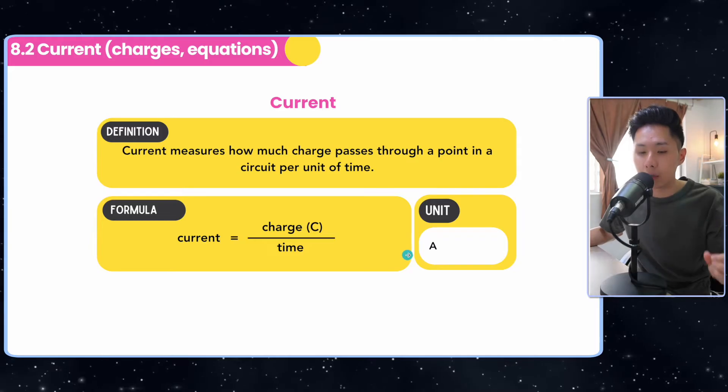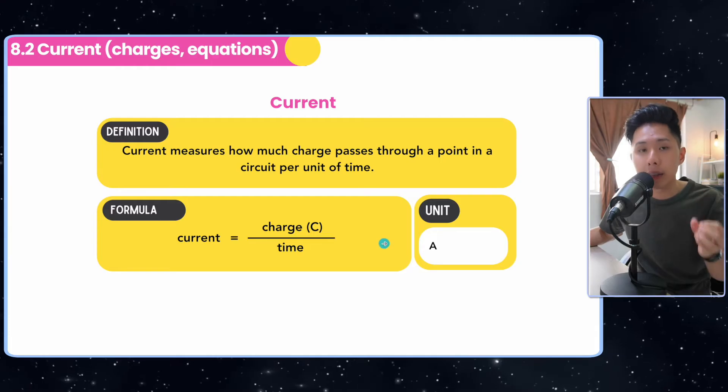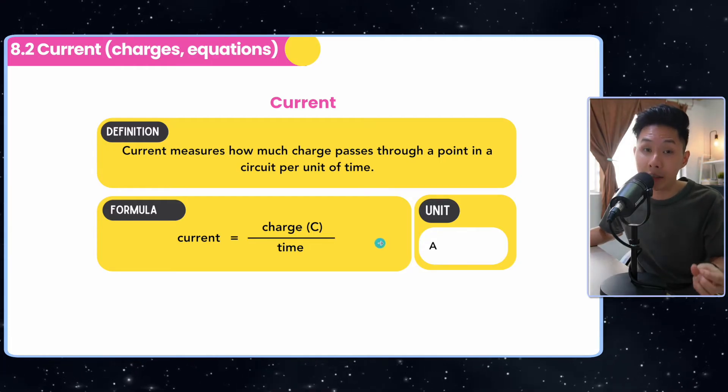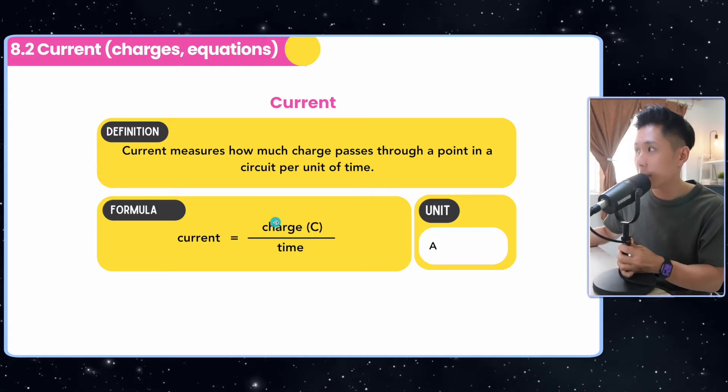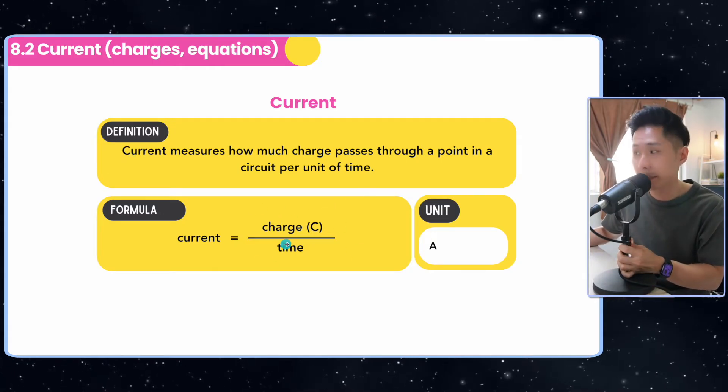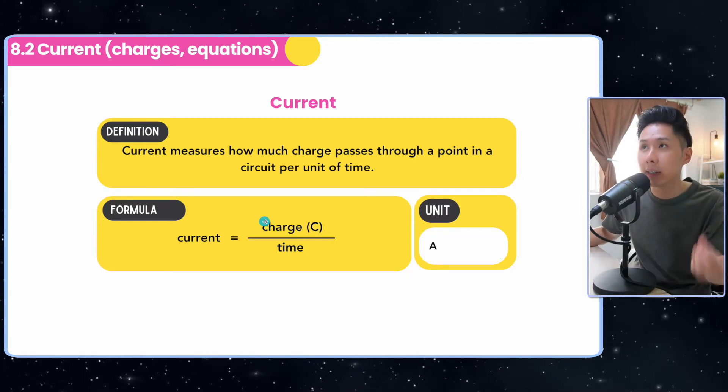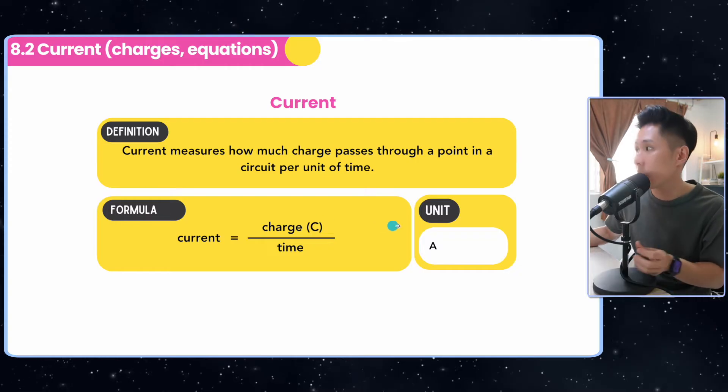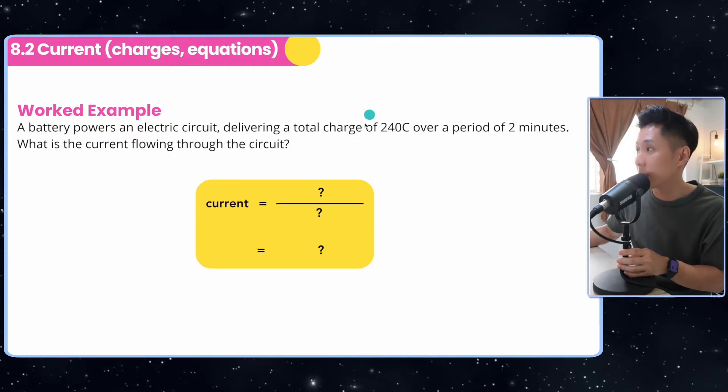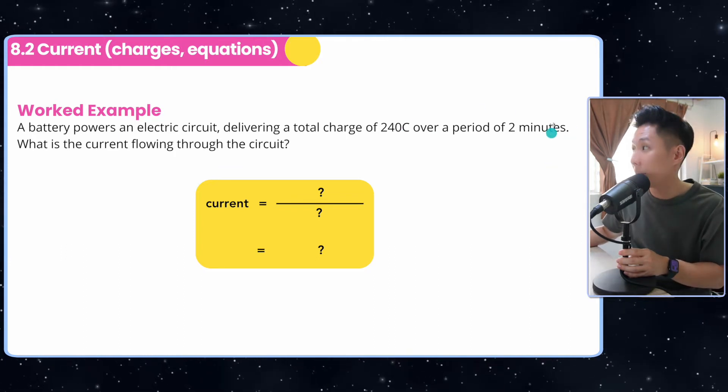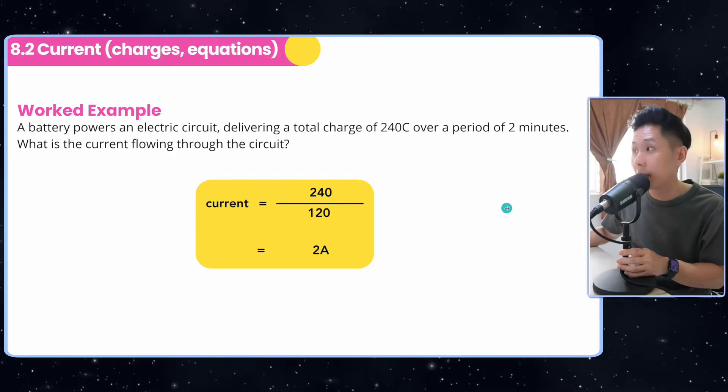So we've talked about how this electron carry charge. Now we can talk about current, because current is just the flow of electrons that carry charge. So if you look at the formula of current here, it's just how much charge passed through a point per unit time. So when you talk about how much charge, it's basically just how much electrons, because it's electrons that are carrying the charge. And the unit is ampere. So let's solve a very easy question. You have a charge of 240 over a period of two minutes. So I have to convert this to second, which will give me two ampere. So that's how you apply this formula.